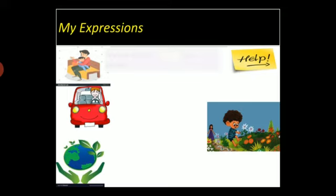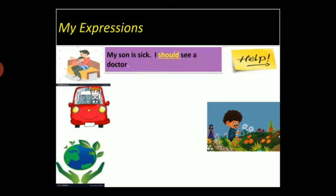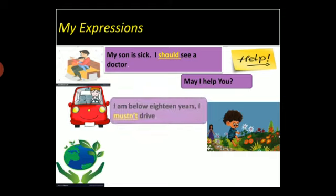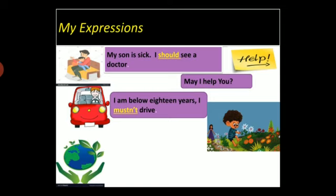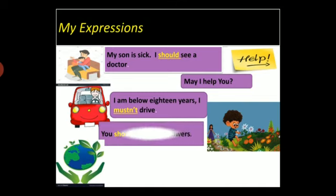See the examples: 'My son is sick, I should see a doctor' — here the sentence denotes requirement or the duty of a mother for her son. 'May I help you?' — here it's a polite request or proposal. 'I am below 18 years, I must not drive' — this sentence denotes prohibition; one who is below 18 years is strictly forbidden to drive. 'You should not pluck flowers' — it's like advice.